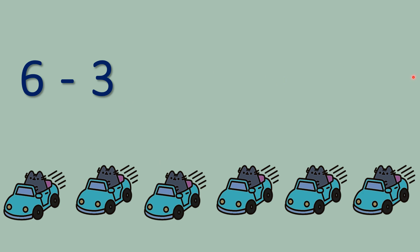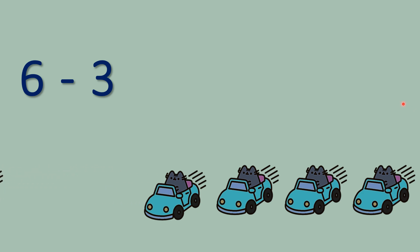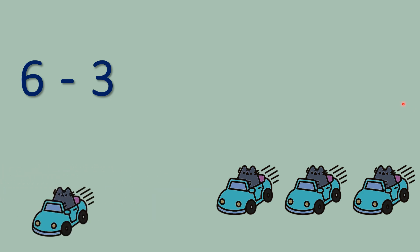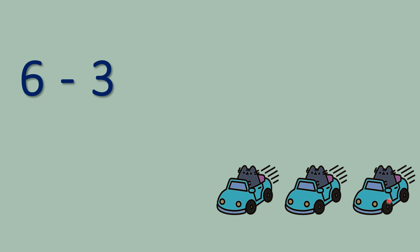So here, how many cars are left? Let's see. 1 car ran away, 2 cars ran away, 3 cars ran away. How many cars are left? 1, 2, 3. 3 cars are left. So equals to 3. 6 minus 3 equals to 3.